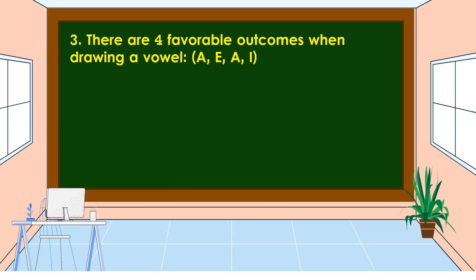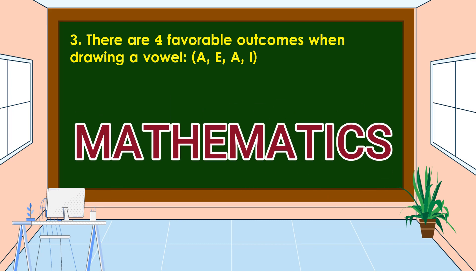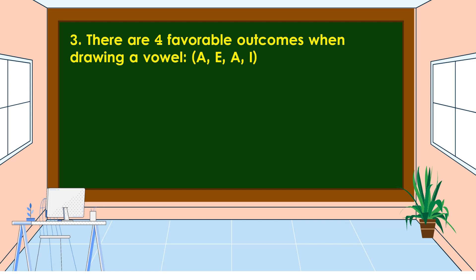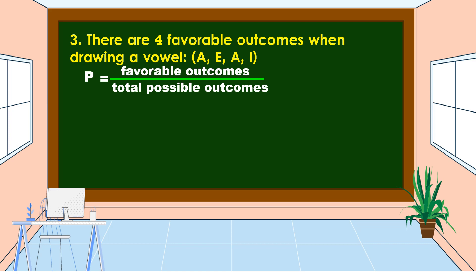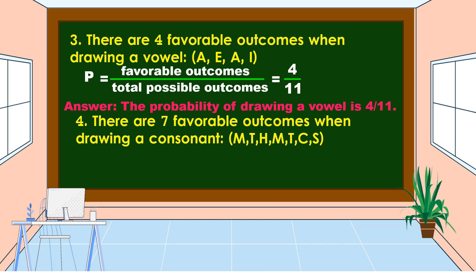For the third question, there are four favorable outcomes when drawing a vowel. The vowels in the word mathematics are A, E, A, and I. Using the formula P equals favorable outcomes over total possible outcomes, the favorable outcomes is 4 and the total possible outcomes is 11. Therefore, the probability of drawing a vowel is 4 over 11.